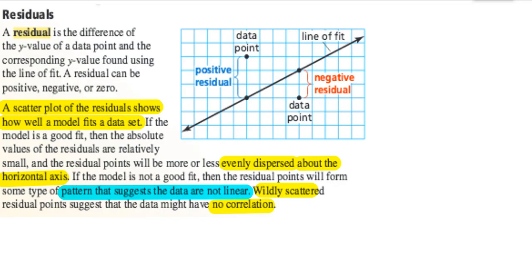Today's part of the lesson we're going to do lines of best fit — we're going to create the lines of best fit and figure out whether the line of best fit is actually a good model for the scatter plot. So let's talk about whether the line is a good model first. We're going to use something called residuals.